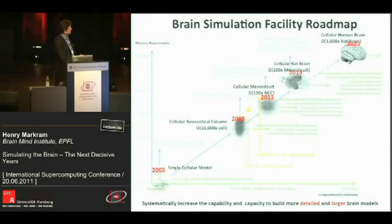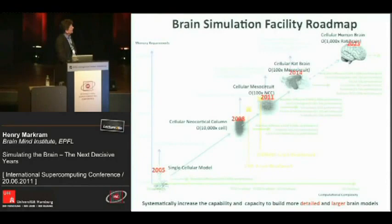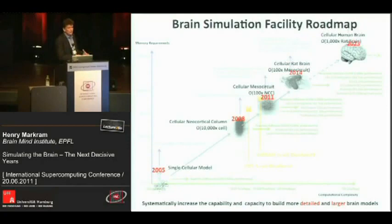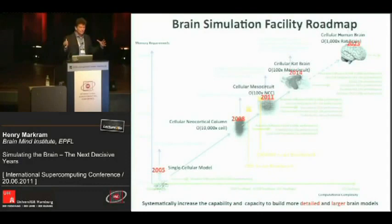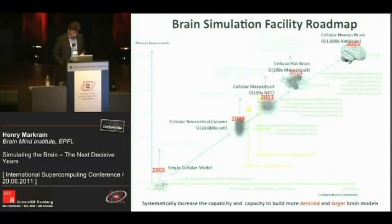Before we started, it was basically possible to build one neuron running on a single PC. By 2008 we had built the first cortical column — 10,000 neurons. Today we're at about 100x of that. It's technically possible, for example on the ULIC machine, to simulate 100 million neurons on ULIC's Blue Gene machine. We'd need about an exascale to get to the human brain at the cellular level. But with the multiscale strategies, we'll be able to go, as needed, into deeper simulations that are much more precise.